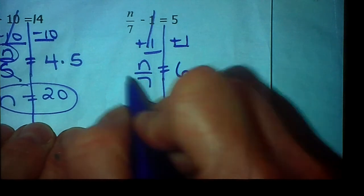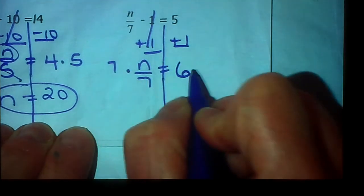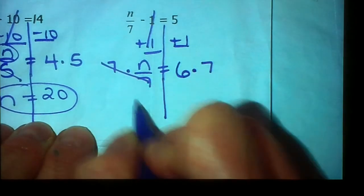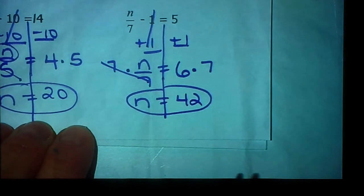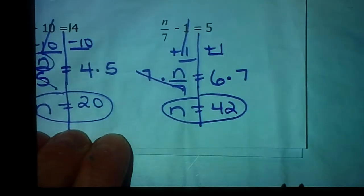Now n is being divided by 7. To undo, dividing by 7, we do the opposite. And multiply each side by 7. n is equal to 42. All right. Finish your section 5 problems. We'll see you shortly for section 6.